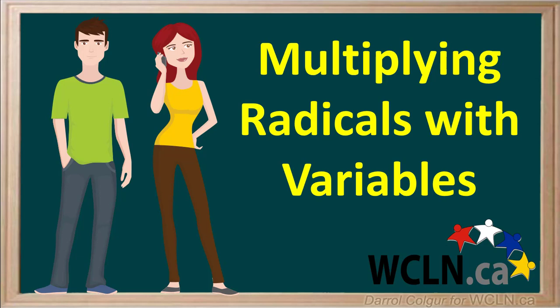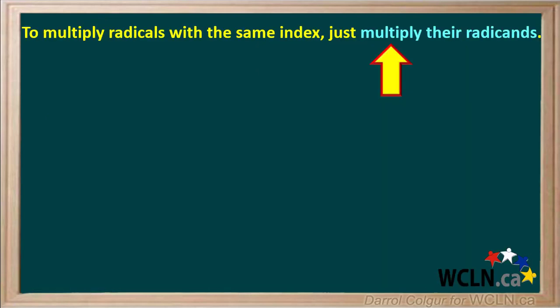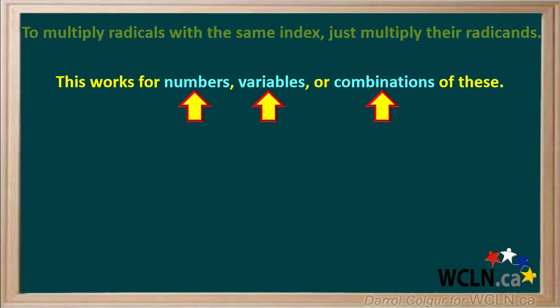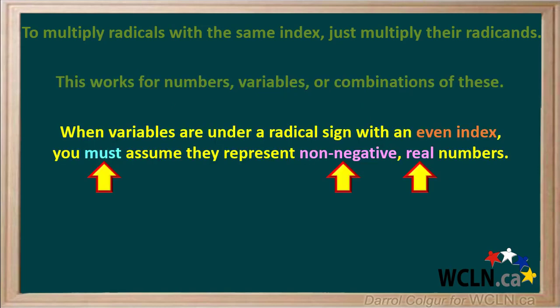Radicals with variables can be multiplied just like radicals with numerals. To multiply radicals with the same index, just multiply their radicands. This works for numbers, variables, or combinations of these.